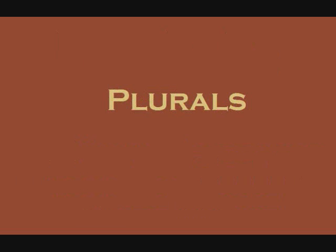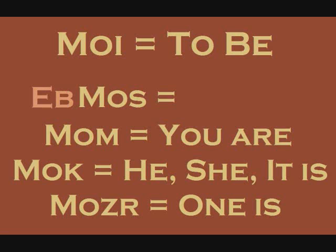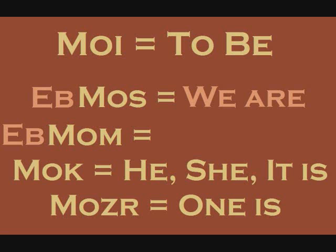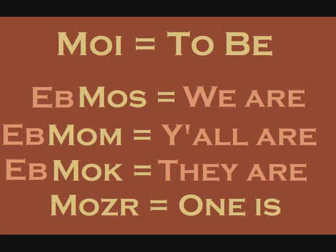The first three persons can all be made plural by adding the special word EB before the verb or noun. So EB MOS means we are, EB MOM means you all are, and EB MOC means they are. You don't pluralize the fourth person, because that doesn't make sense — you can't really specify a number if you aren't describing something specific.